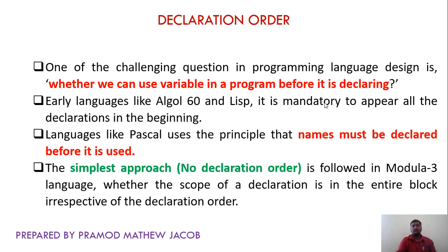Next is declaration order. One of the challenging questions in programming language design is whether we can use a variable before it is declared. Early languages like Algol 60 and Lisp required all declarations to appear at the beginning. Pascal uses the principle that names must be declared before they are used. In C, we also have to declare variables before they are used. The simplest approach — no declaration order — is followed in Modula-3, where the scope of a declaration covers the entire block regardless of declaration order. But most languages like C, C++, and Java require declaring variables before first use.